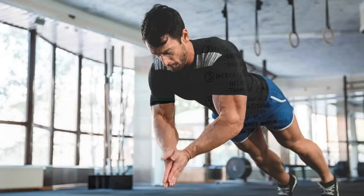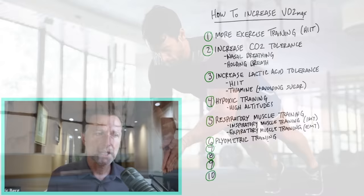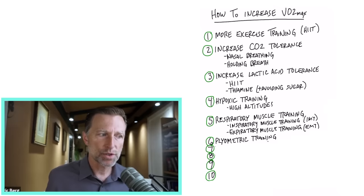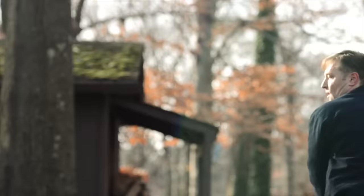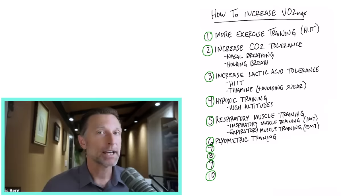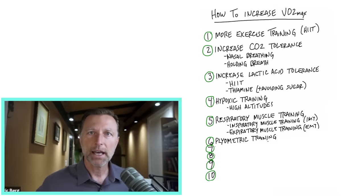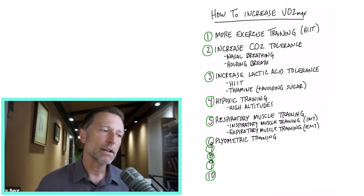All right, number six, plyometric training. This is where you're doing short bursts of exercise, like maybe you're jumping on a platform back and forth. It's like explosive short burst of exercise. And I like to do this with just with an ax chopping down a tree or chopping a log in half. It's explosive. It's great plyometric, works your upper body, and then also hopping on a platform. There's many different types of plyometrics you can do. I've done videos on this, but that's another way to greatly increase your VO2 max.